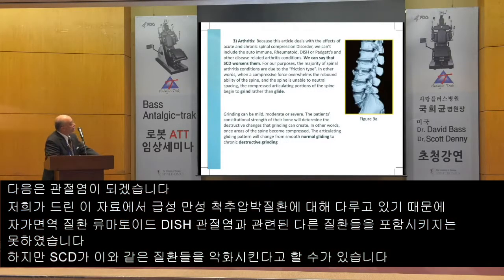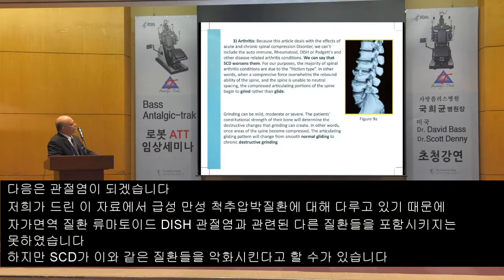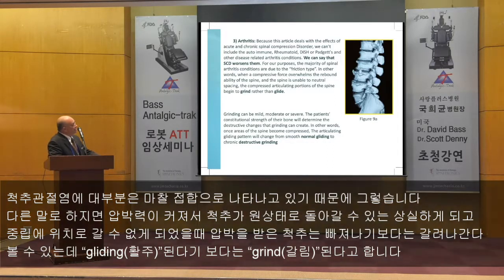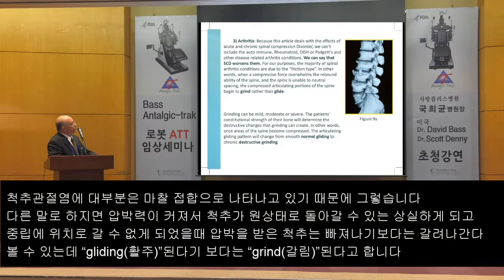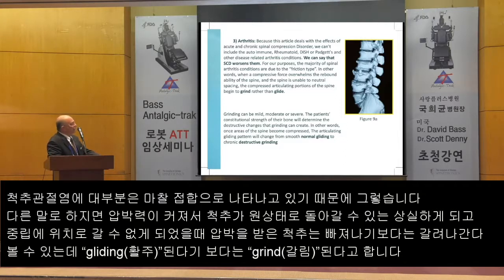Arthritis. Because this article deals with the effects of acute and chronic spinal compression disorder, we can't include the autoimmune type diseases such as rheumatoid arthritis or Paget's disease. We can say that SCD worsens them. For our purposes, the majority of spinal arthritis conditions are due to friction type — when a compression force overwhelms the reboundability of the spine and the spine is unable to maintain neutral spacing, and the compressed articulating portions begin to grind rather than glide.